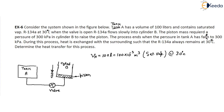When the valve is open, the refrigerant inside Tank A rushes into Cylinder B. The piston mass requires a pressure of 300 kPa in Cylinder B to raise the piston. If the refrigerant enters Cylinder B, the piston will lift when pressure reaches 300 kPa. The process ends when the pressure in Tank A has fallen to 300 kPa.